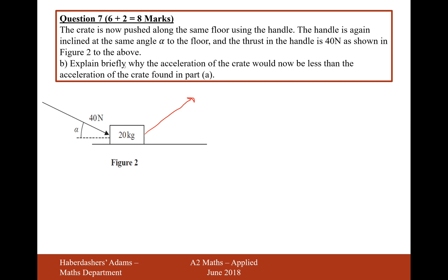Explain briefly why the acceleration of the crate would now be less than the acceleration of the crate found in part A. So we want to explain why there's now going to be less acceleration. It's probably going to be because there's more friction if we actually work out what R is equal to. So now R is going to be equal to 20G.